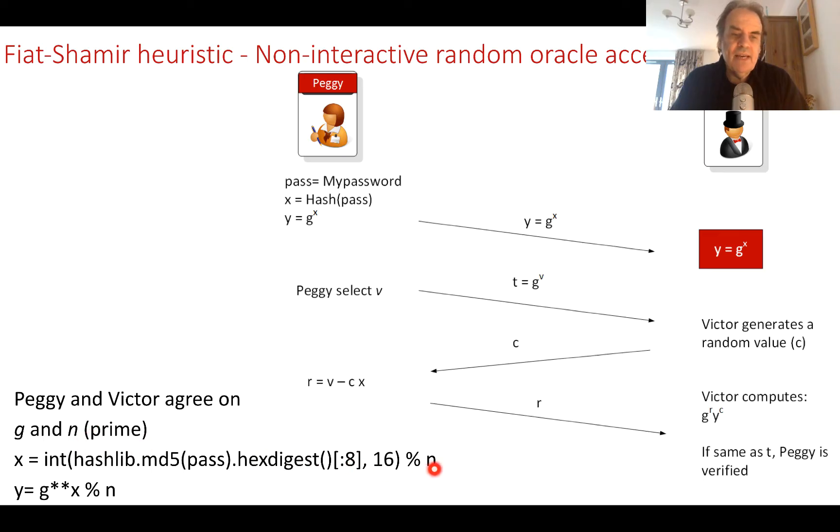These operations can grow very large, so we constrain that by having the mod p operation, which is a prime number. Both Peggy and Victor agree on a large prime number, and they also agree on a g value that they're going to use.